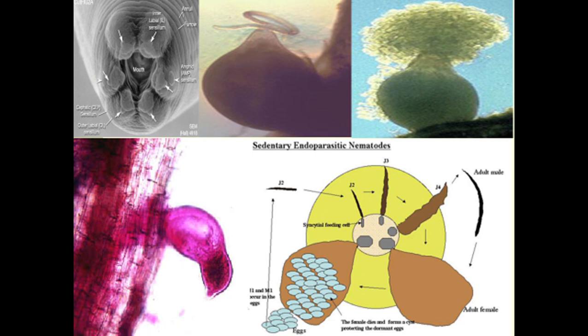The J2 stage is the infective stage of the nematode, which is very important from both the nematode perspective and the farmer's perspective. From the nematode perspective, this is important because it is the infective stage, and from the farmer's perspective this stage is very important because it is the most vulnerable stage towards nematicides and other interventions used for the control of nematodes. The J2 stage infects the plant roots and develops into the J3 stage.